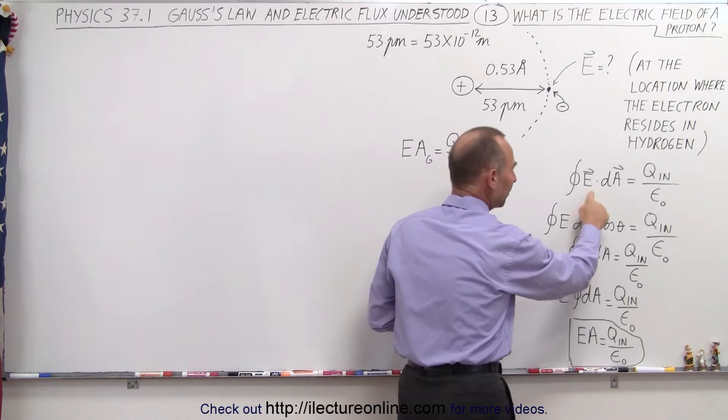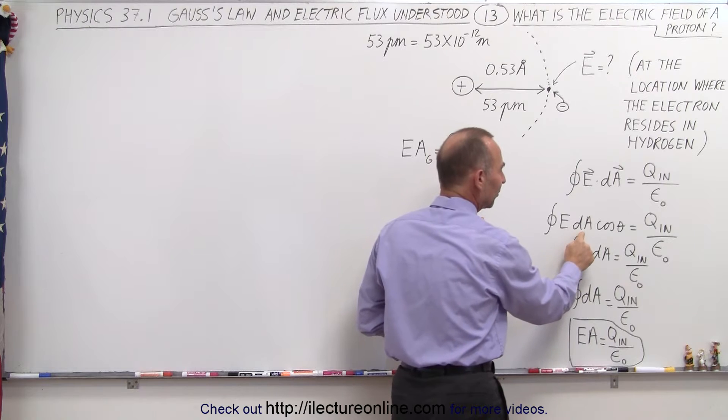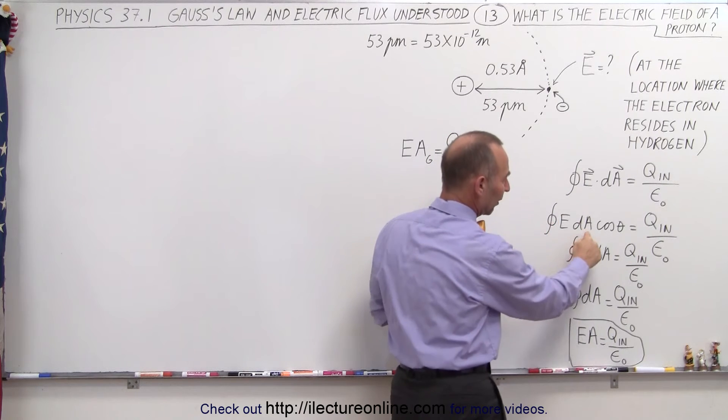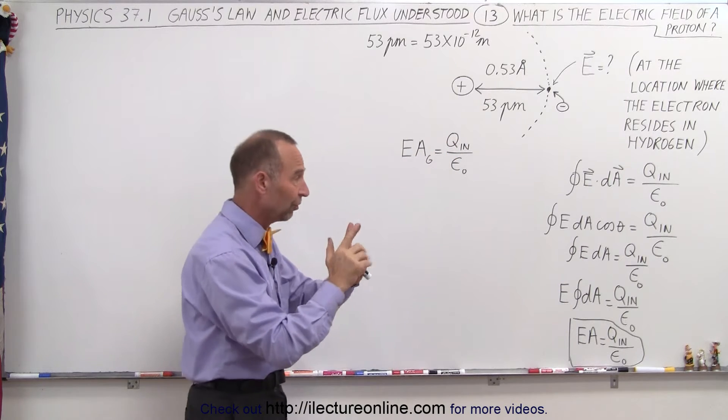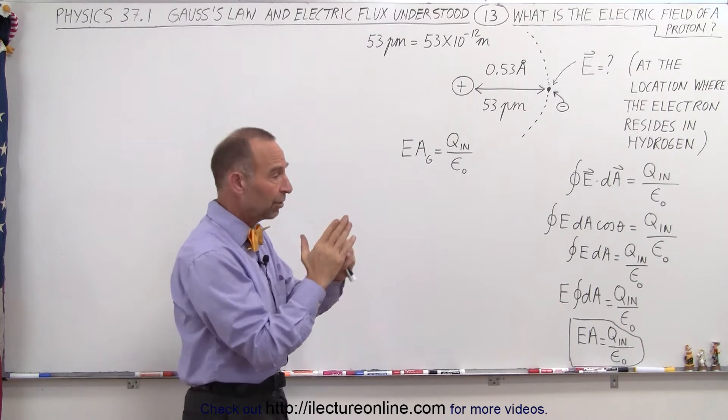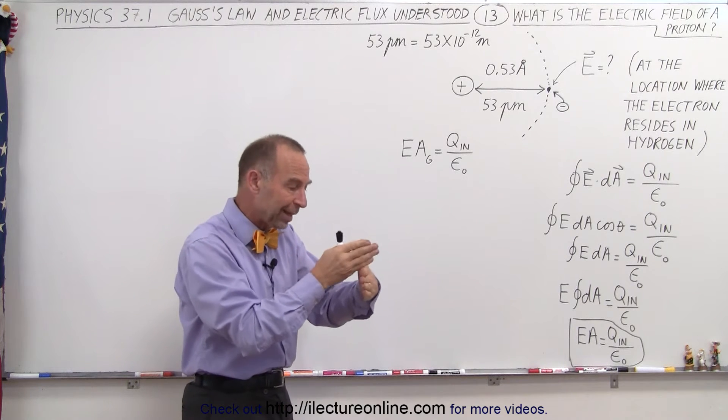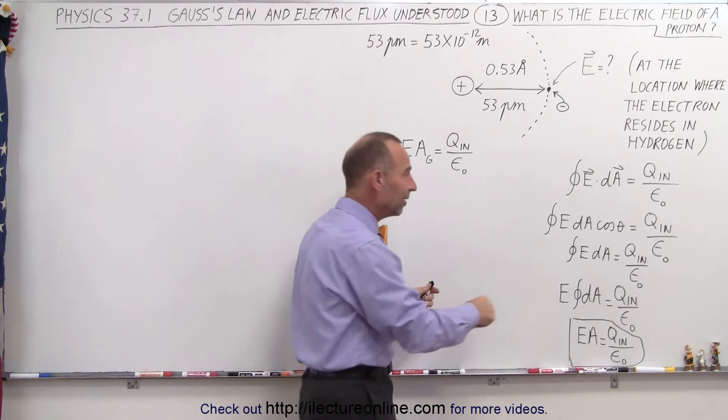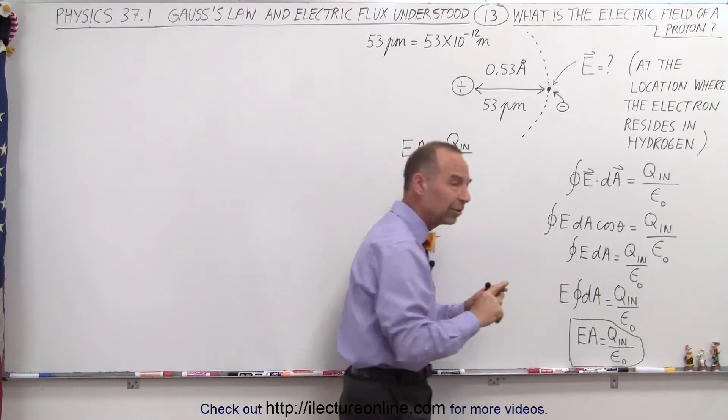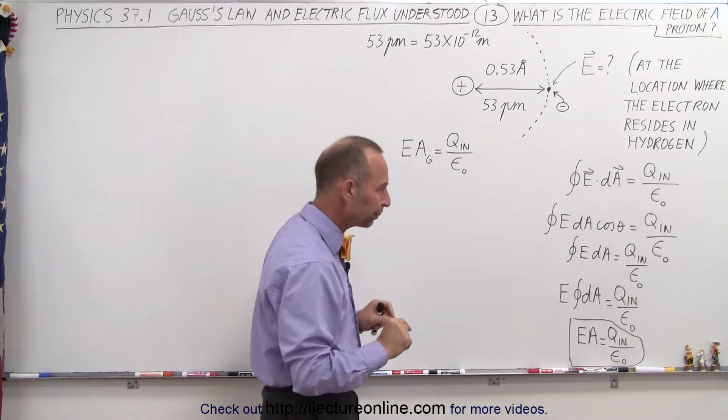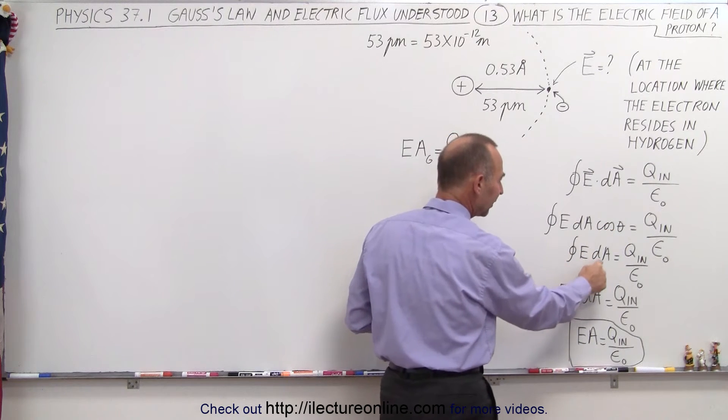Since this is a dot product, we can rewrite this as the magnitude of the electric field times the small area element on the surface of the Gaussian surface times the cosine of the angle between the perpendicular to the surface and the electric field. But since the electric field will emanate through that Gaussian surface perpendicular to the surface, we can say that the cosine of the angle is 1, because the angle theta is equal to 0. So that eliminates the cosine.